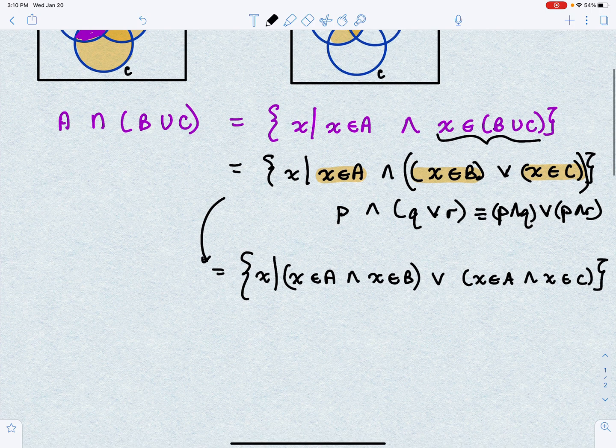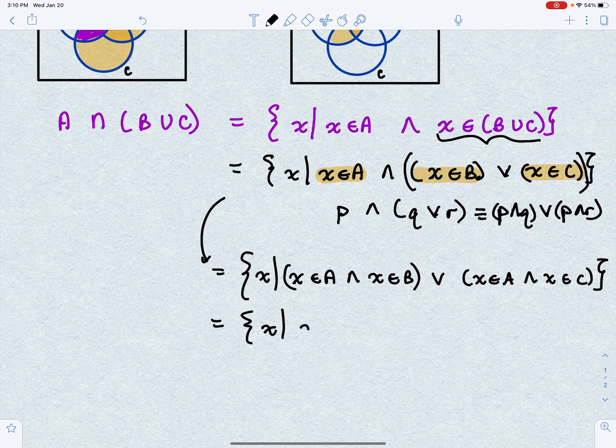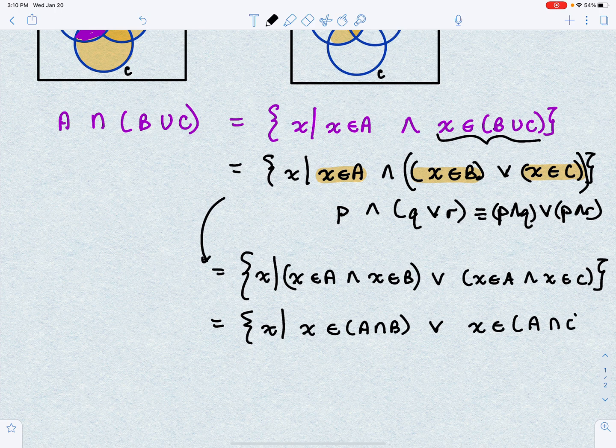So let's just take one more step here. And this is equivalent to the set of all X such that now if X is in A and X is in B, that means X is in the intersection of A and B or X is in the intersection of A and C.